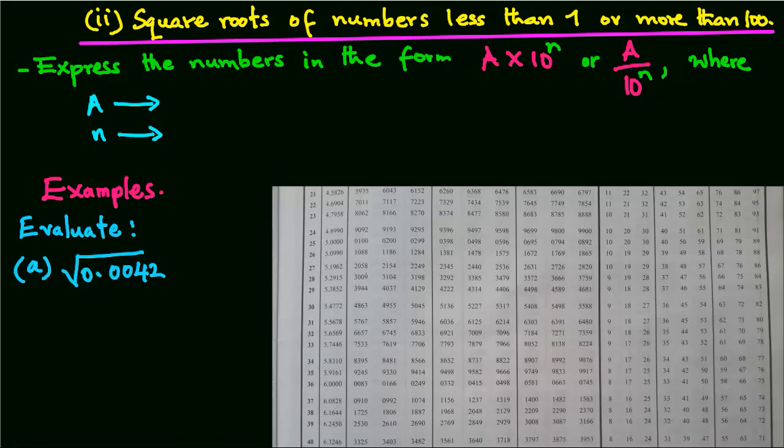Square roots of numbers less than 1 or more than 100. In order to evaluate square roots of numbers less than 1 or more than 100, we express the numbers in the form A times 10 power n